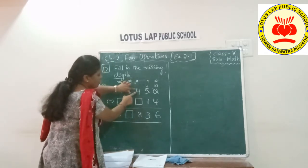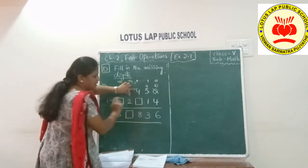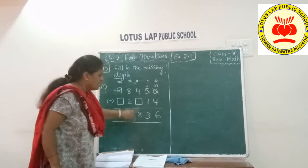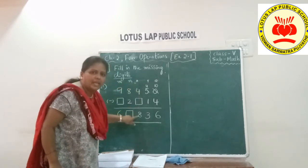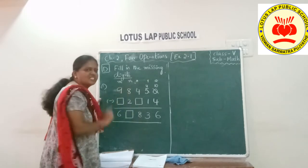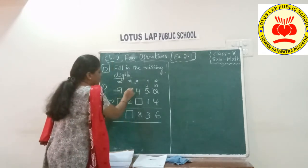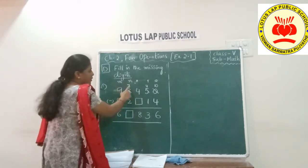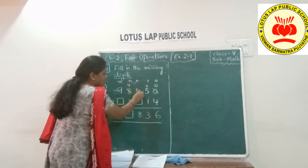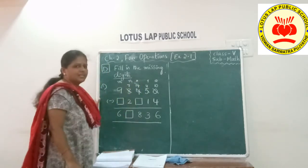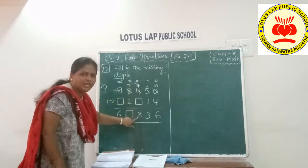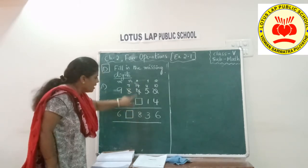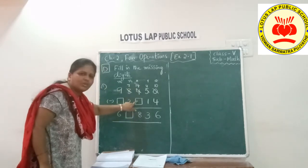Now hundreds place. Four minus something should give us eight. Again it is not possible, as four is a smaller number — how can it give eight? So we need to borrow to the four to get eight. I am borrowing from the next place which is thousands place. Eight will become seven, and I am borrowing ten here. So ten plus four will become fourteen in the hundreds place. Fourteen minus something should give me eight.